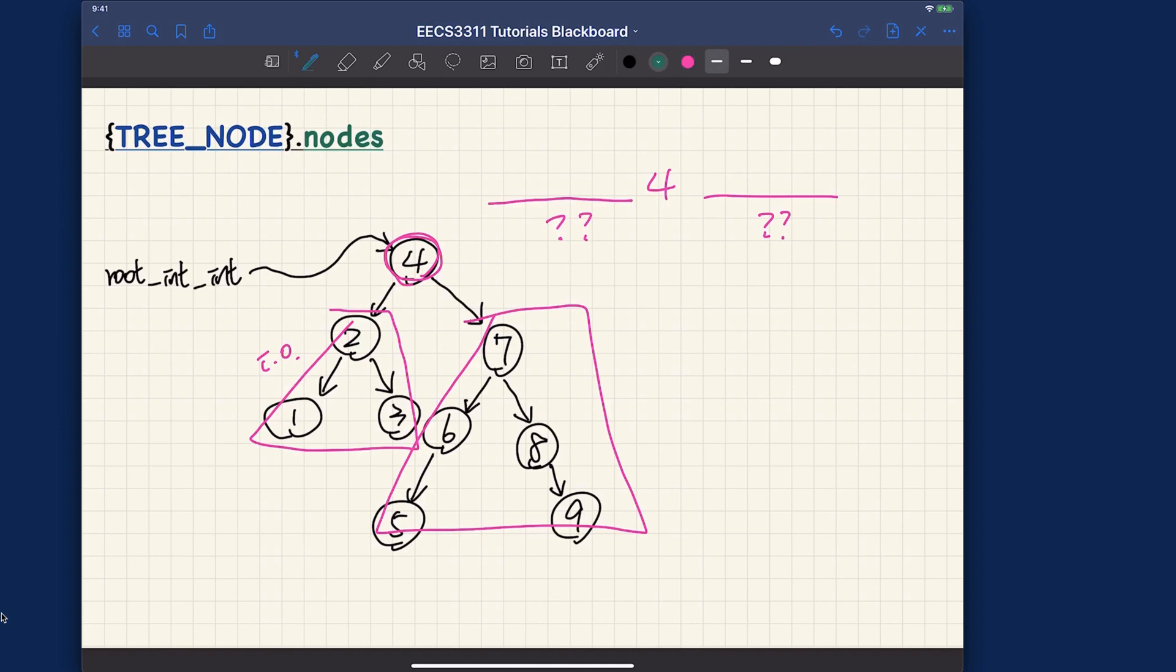Now we have to work out what will be the in-order traversal for this particular green subtree. So now it's going to be, again, the root for this particular subtree is 2.